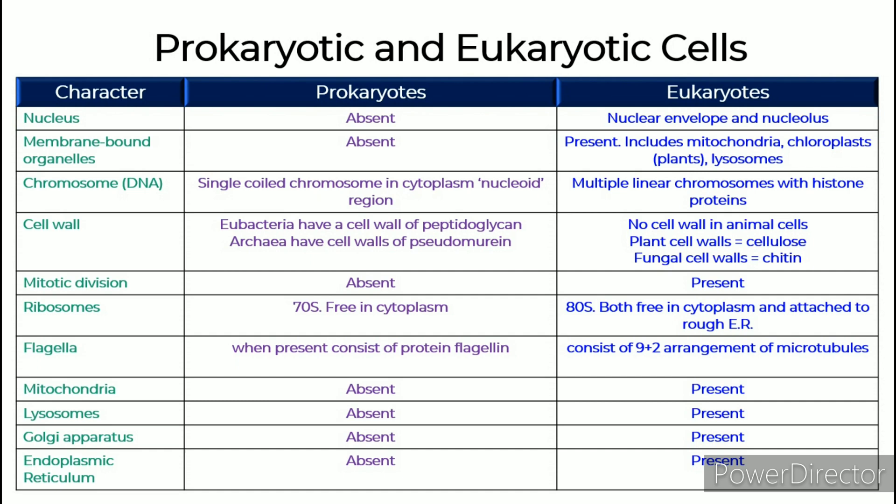Chromosome: Prokaryotes have a single circular chromosome in the cytoplasm called the nucleoid region, whereas eukaryotes have multiple linear chromosomes with histone proteins.